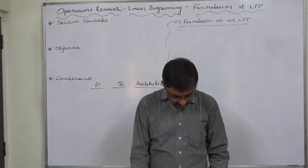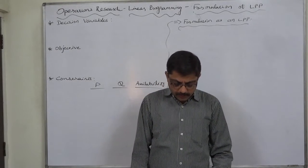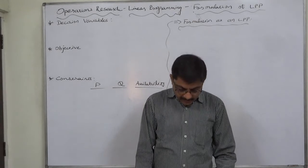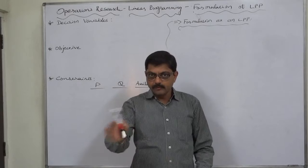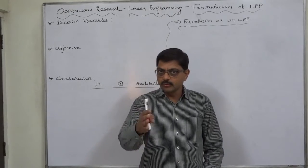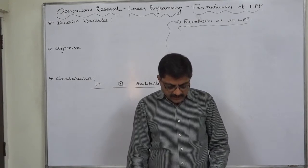It takes three hours to produce a unit of P and one hour to produce a unit of Q. In this proportion the time is used, and total availability is 30,000 hours. The market has been surveyed.